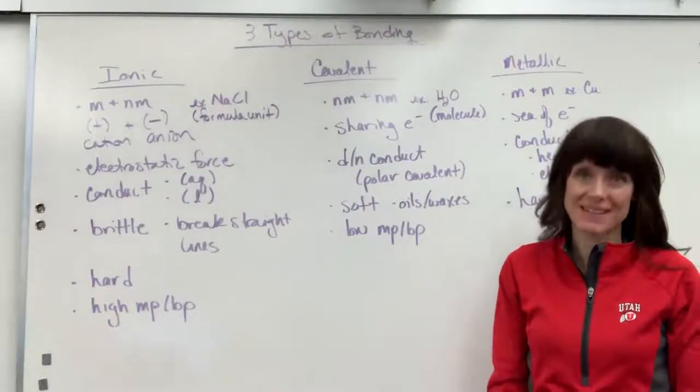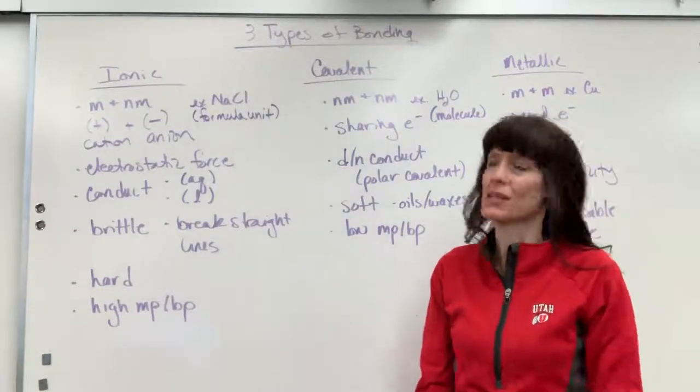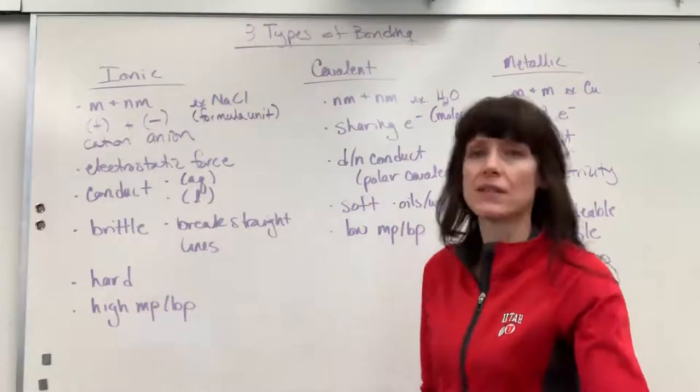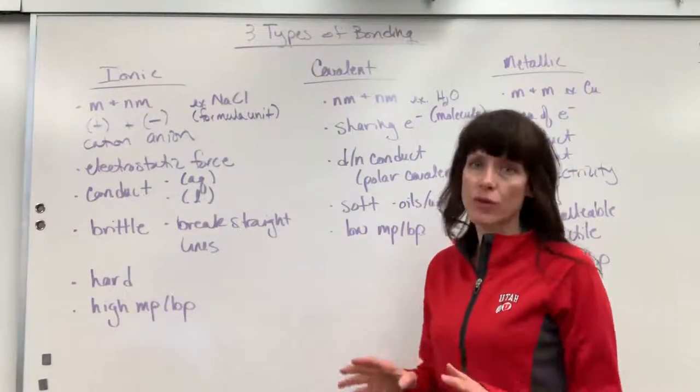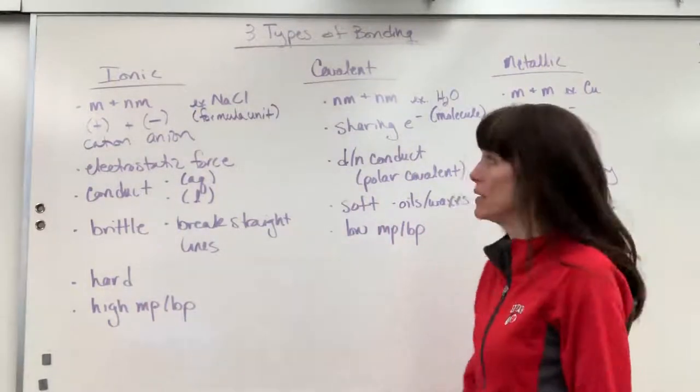Hi, we're going to talk about bonding. Now in a first-year chemistry class, there are three basic types of bonds that you learn: ionic, covalent, and metallic. This is just a really quick overview of the characteristics so that you can demarcate between the different types of bonds.